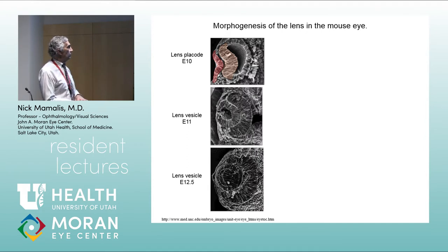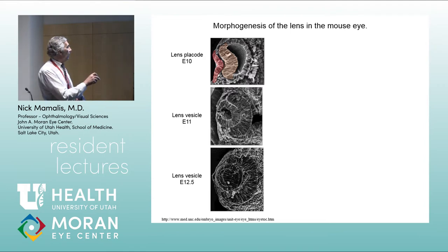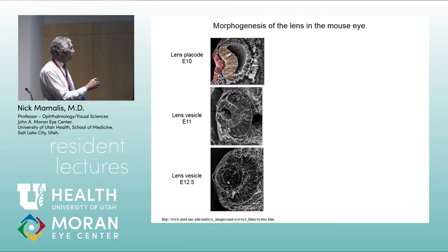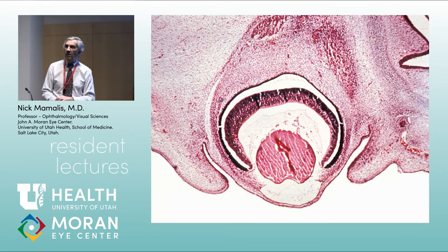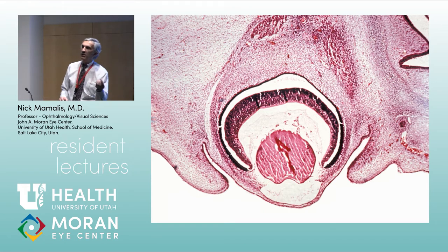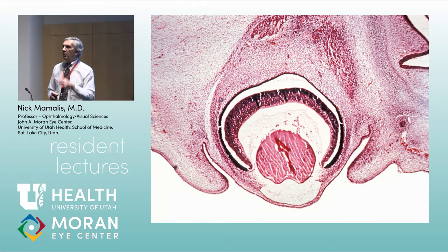In the mouse eye — exactly the same as the human eye — the neuroectoderm pushes out, meets the surface ectoderm, and the surface ectoderm pinches off, causing the neuroectoderm to invaginate, leaving a two-layered structure. Now that neuroectoderm has pinched off as a bilayered structure — what parts of the eye does it form?